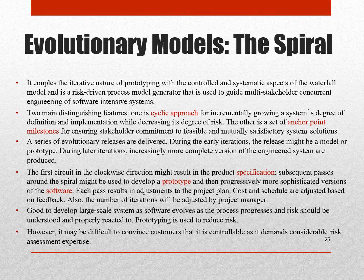Evolutionary models in terms of the spiral model: it couples the iterative nature of prototyping with the controlled and systematic aspects of the waterfall model, and is a risk-driven process model generator used to guide multi-stakeholder concurrent engineering of software-intensive systems. Two main distinguishing features: one is a cyclic approach for incrementally growing a system's degree of definition and implementation while decreasing its degree of risk. The other is a set of anchor point milestones for ensuring stakeholder commitment to feasible and mutually satisfactory system solutions.